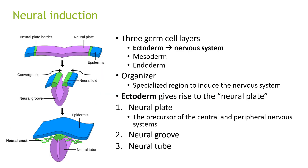Looking at the process of neural induction: there are three germ layers, in which the ectoderm gives rise to the nervous system. You have the ectoderm, mesoderm, and endoderm. A specialised region called the organizer introduces this nervous system development. The ectoderm gives rise to the neural plate, which is the precursor of the central and peripheral nervous systems, and it also forms a neural groove and neural tube.